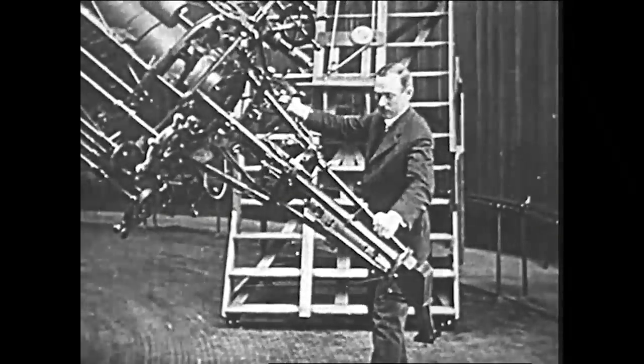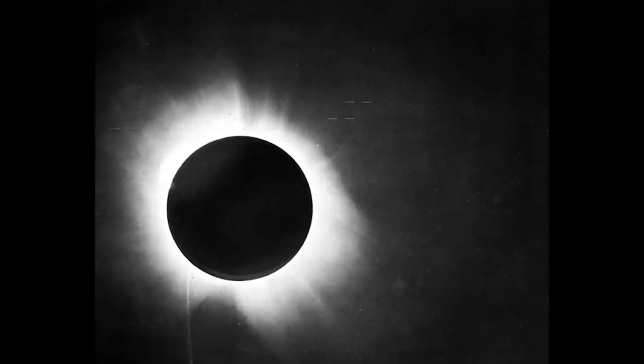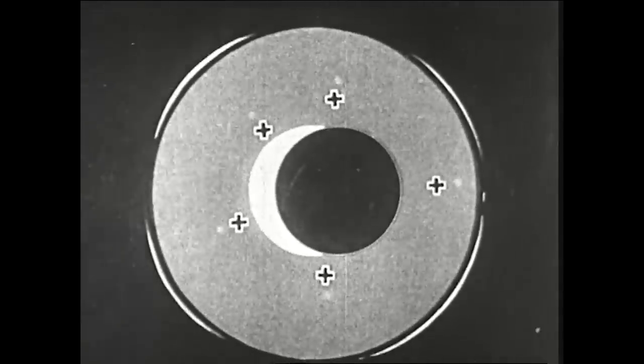One of the first convincing proofs of general relativity came in 1919, during an eclipse of the Sun, when astronomers saw its gravity shift the position of stars close to its edge.